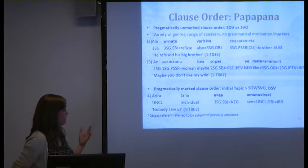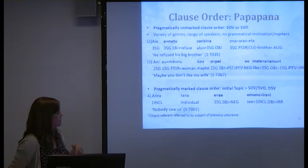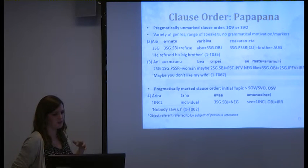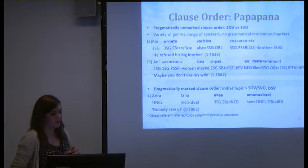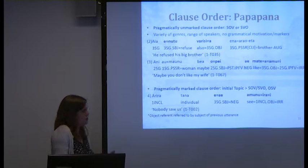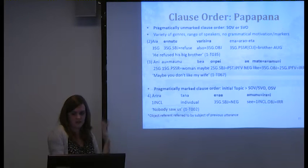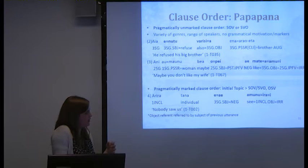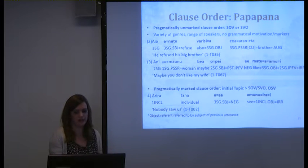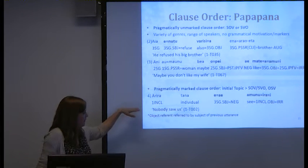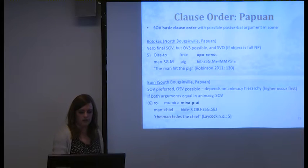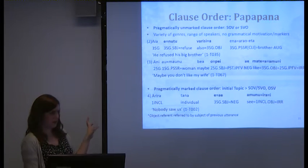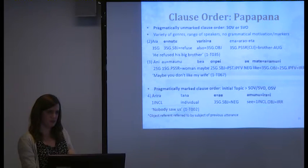In Papua Pana, example two shows SVO order — 'he refused his big brother' — and another shows SOV — 'you, my wife, maybe you don't like her.' The pragmatically marked clause order involves an initial topic; if the subject is topic we get SOV or SVO, but if the object is topic we get OSV, as in 'us, nobody saw us.' We've got the SVO order similar to Northwest Solomonic, but where does the SOV order come from? It's definitely not Northwest Solomonic.